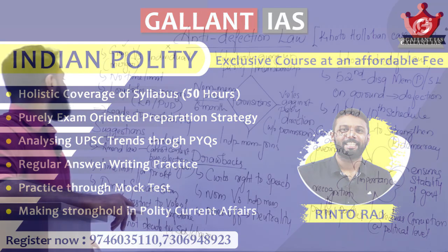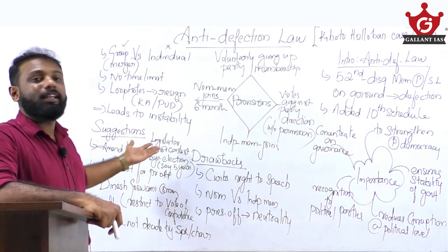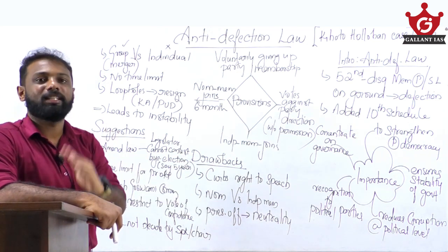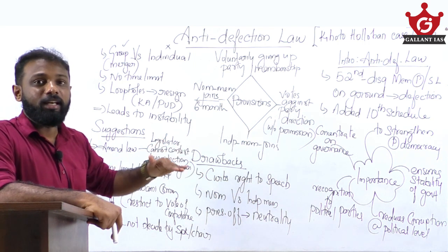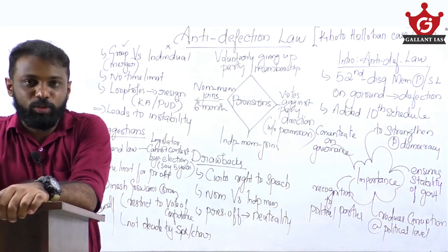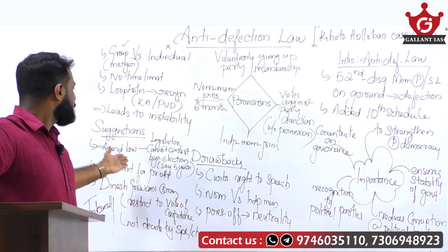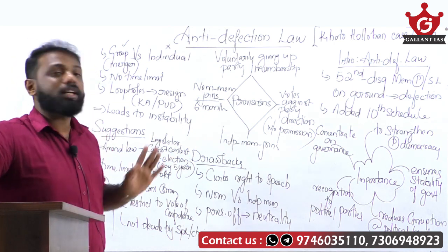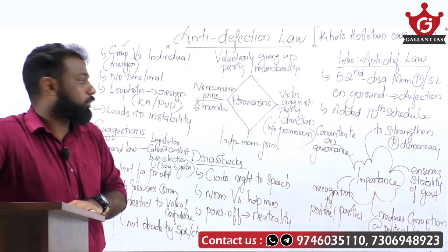Now you can suggest some measures. You can say that the law can be amended so that a resigned legislator cannot contest a by-election for at least 5 or 10 years. As seen in Karnataka, a legislator after resigning goes for the by-election and many get elected again, affecting the stability of the executive. So the law can be amended to make provisions that a resigned legislator should not contest a by-election for at least 5 years.